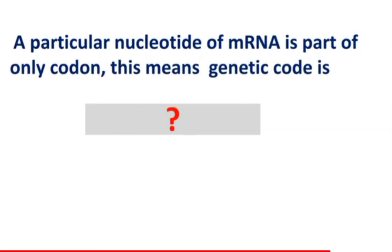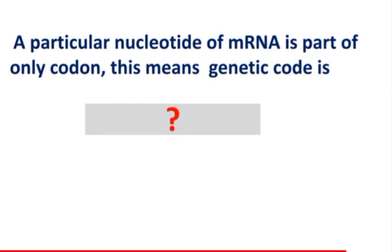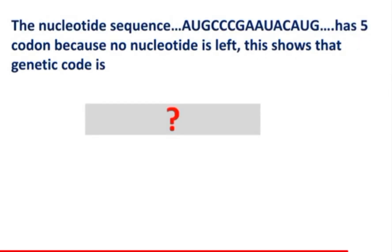A particular nucleotide of mRNA is part of only one codon — this means the genetic code is what? The nucleotide sequence AUG CCC GAA UAC AUG has 5 codons because no nucleotide is left over. This shows that the genetic code is what?